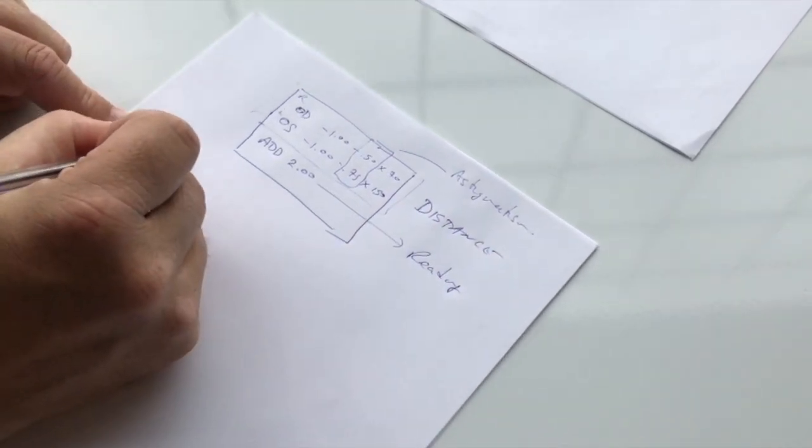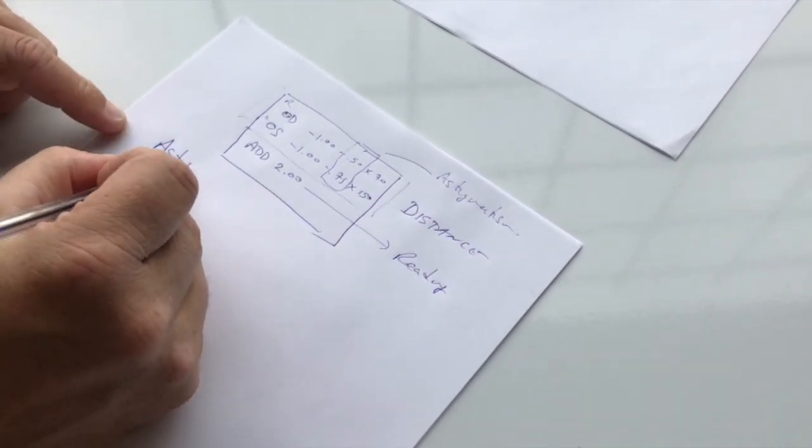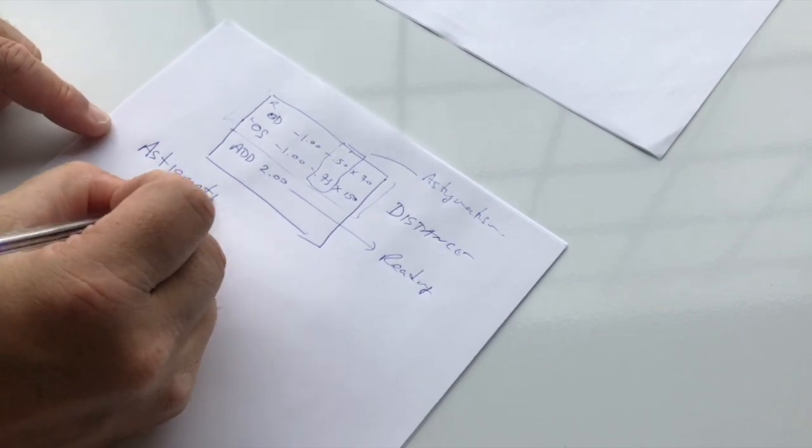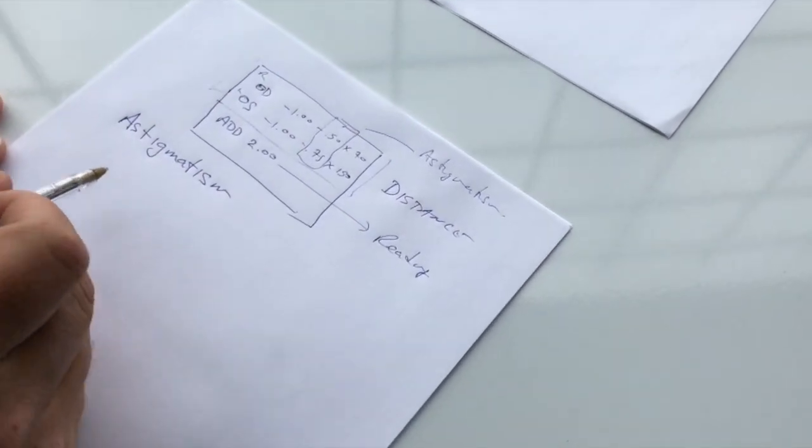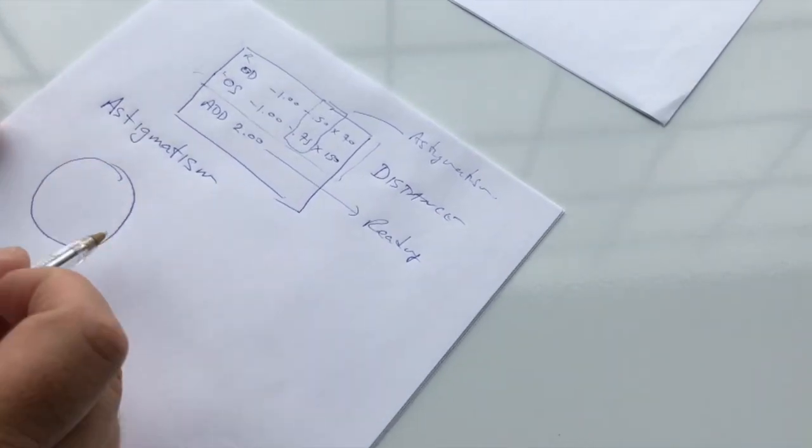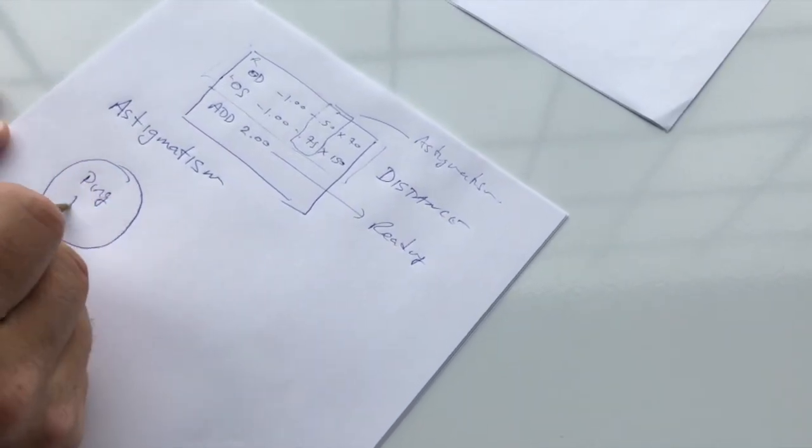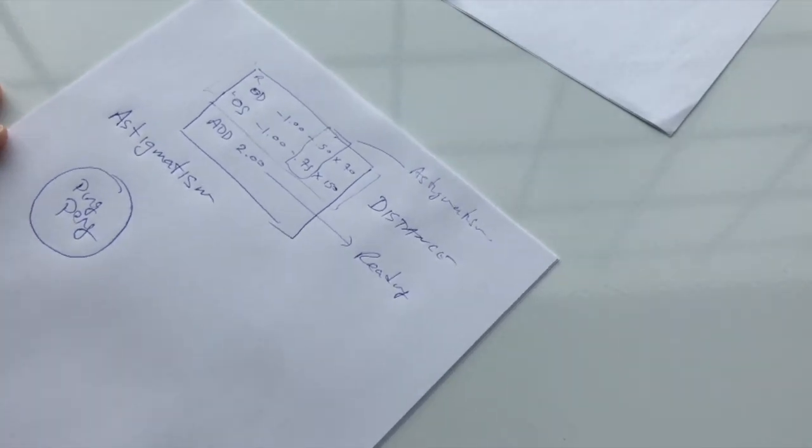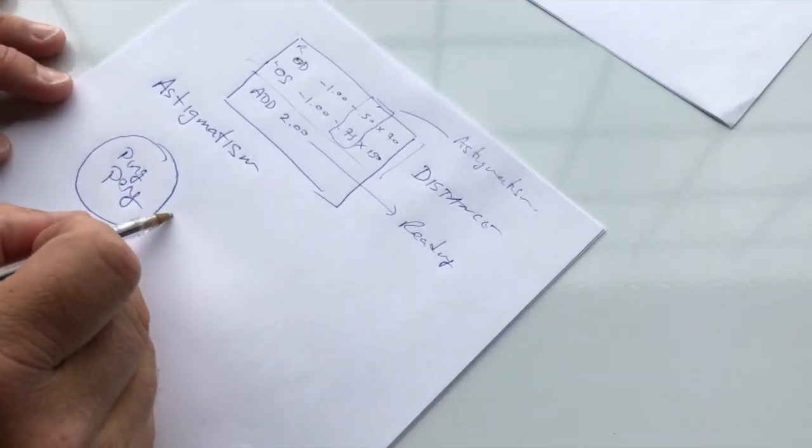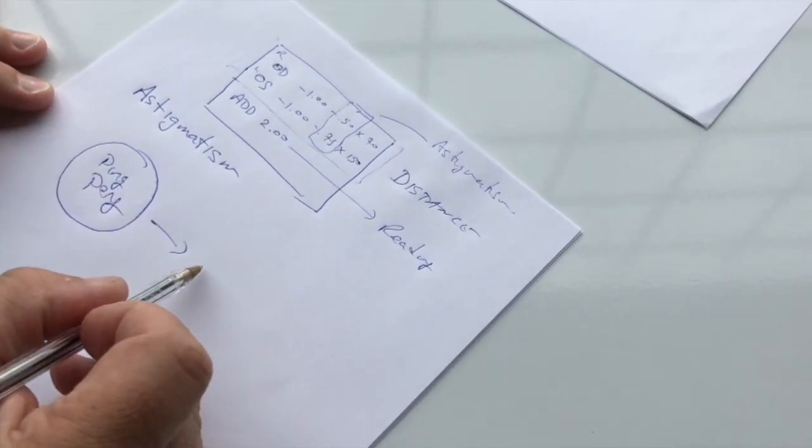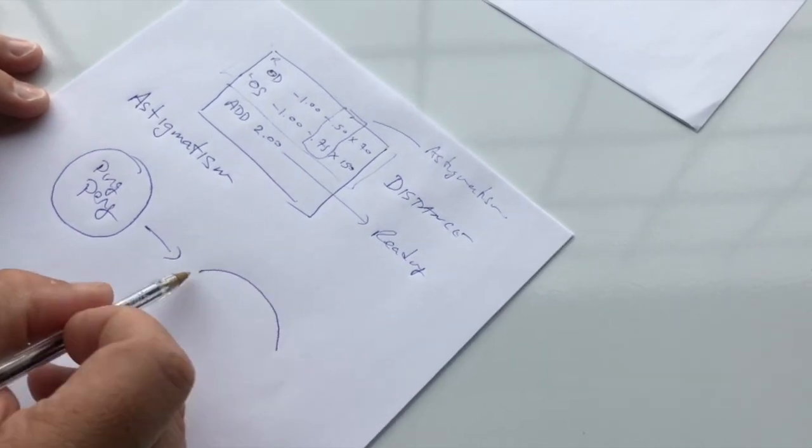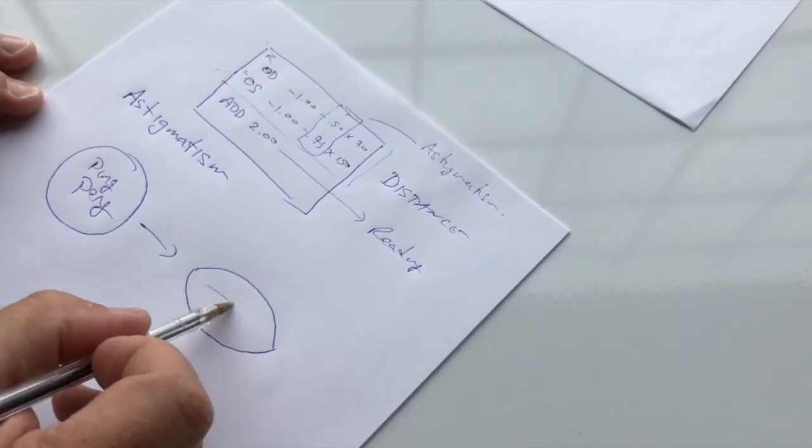This number here, that means that there's astigmatism present. Astigmatism is spelled A-S-T-I-G-M-A-T-I-S-M. Typically, it means that the eye, instead of shaped like a nice round ping pong ball, it means that the eye is shaped a little bit more like an American football. That's what astigmatism means.